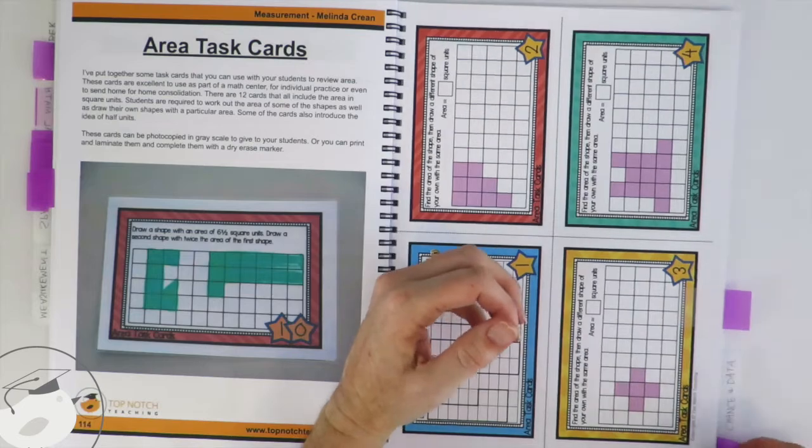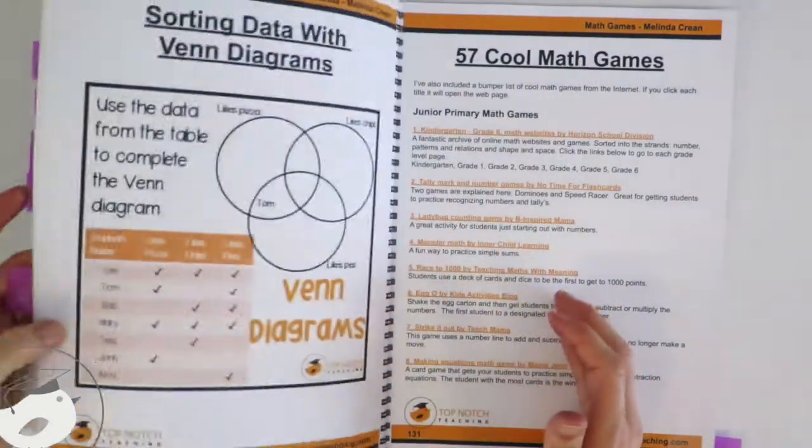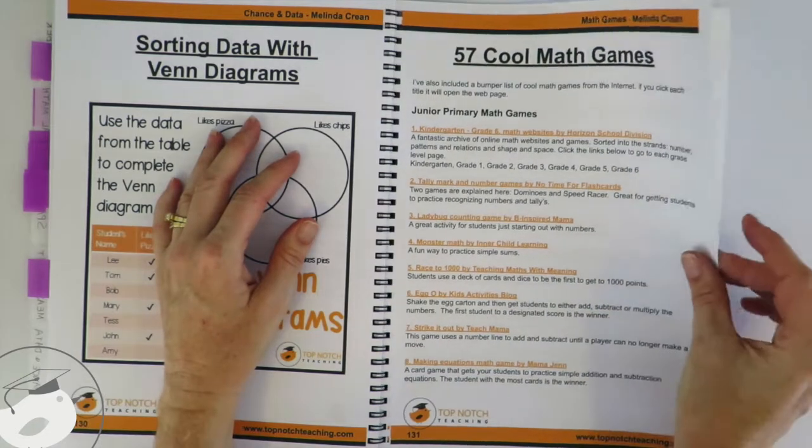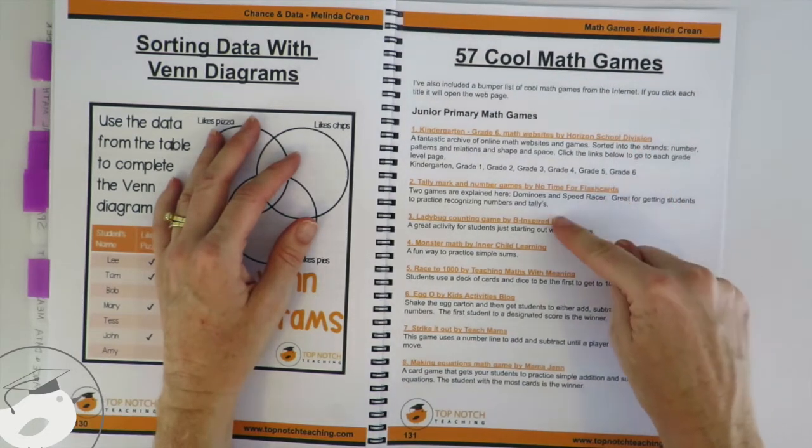All right, and the last little thing I wanted to show you is at the back of the ebook there's also a section for math games. So when you get the PDF, each of these orange links will go to a website that's got some great math games.